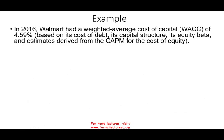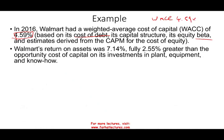In 2016, Walmart has a weighted average cost of capital — WACC — of 4.59%, based on their cost of debt and capital structure, beta, and so on. Walmart's return on asset, ROA, is 7.14%, where ROA is EBIT divided by average assets. The difference between them is 2.55%. Since ROA is greater than WACC, we should have a positive EVA. Walmart's return on asset was 7.14%, which is 2.55% greater than the opportunity cost of 4.59%.